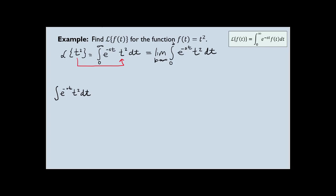To evaluate this integral, we will be using integration by parts. So this is what I'm going to assign to u and dv. From here, du equals 2t dt. And v equals negative e to the power negative st over s. If you're not sure where I got that from, you just need to remember two things: we treat s as the constant, and then with that in mind you integrate using basic u-substitution. So once you perform basic u-substitution, you'll see that that's the result you get. And I'm going to continue with integration by parts.